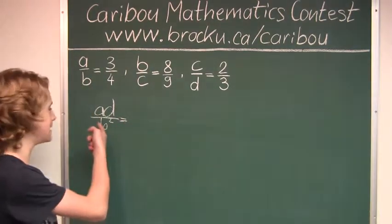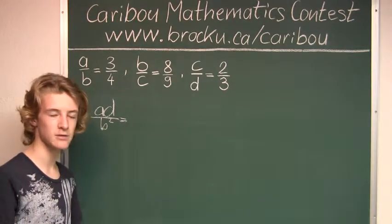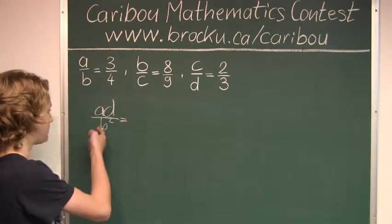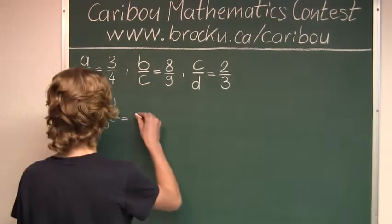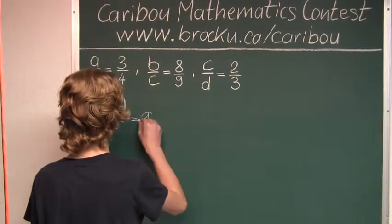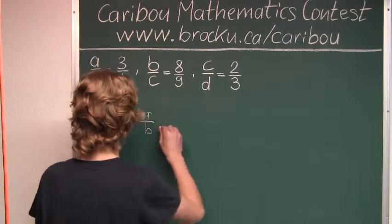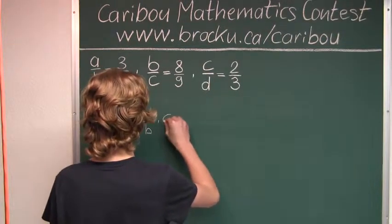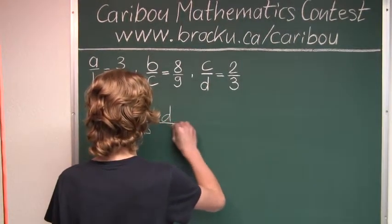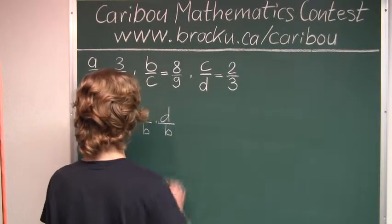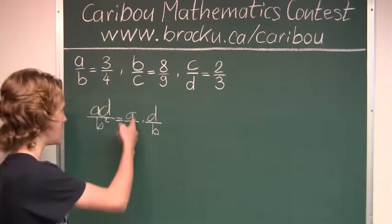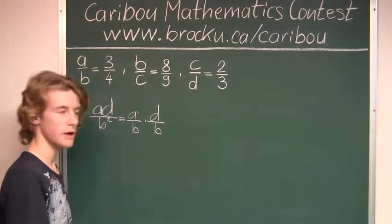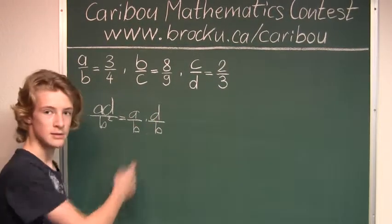We can break down AD over B squared into two factors, which would be A over B times D over B. Now we already know what A over B is, so we are looking for what D over B is.